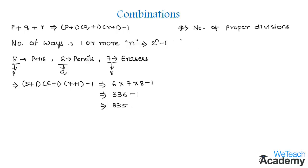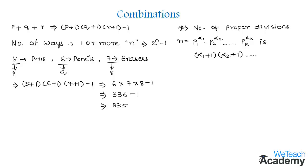Now let us learn the formula for the number of positive divisors. If a positive integer n equals p1 to the power alpha1 into p2 to the power alpha2, continuing up to pk to the power alpha k, then the number of positive divisors is (alpha1+1)(alpha2+1) continuing up to (alpha k+1).